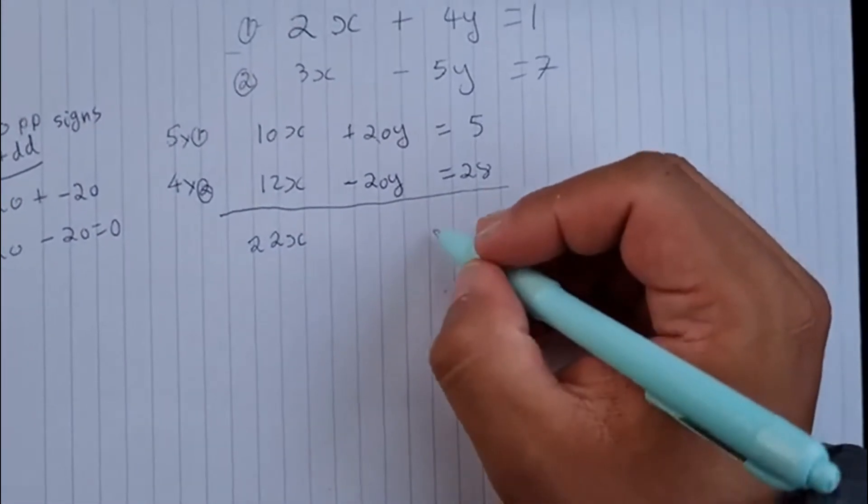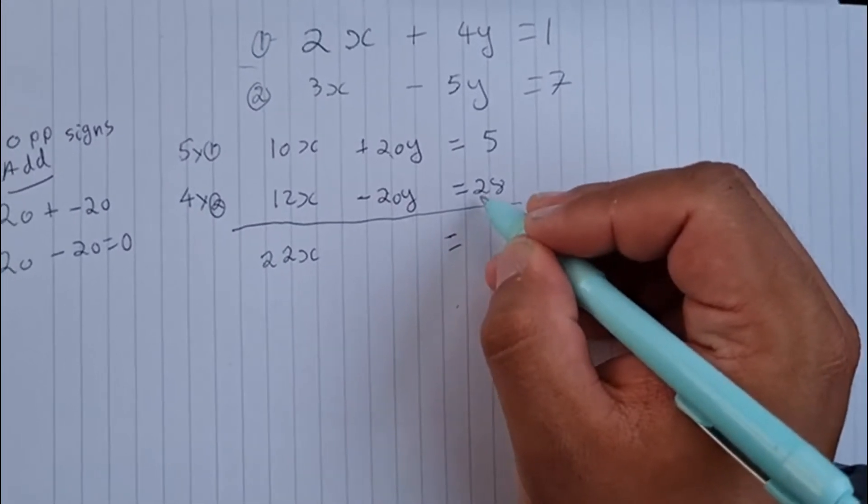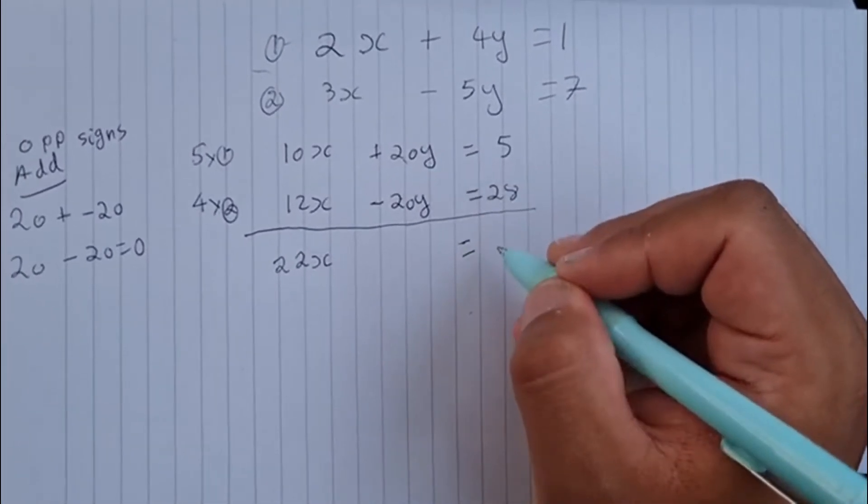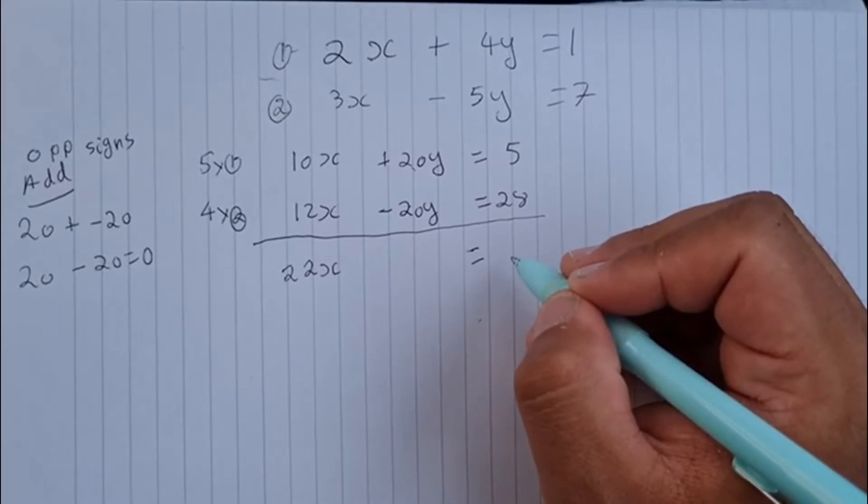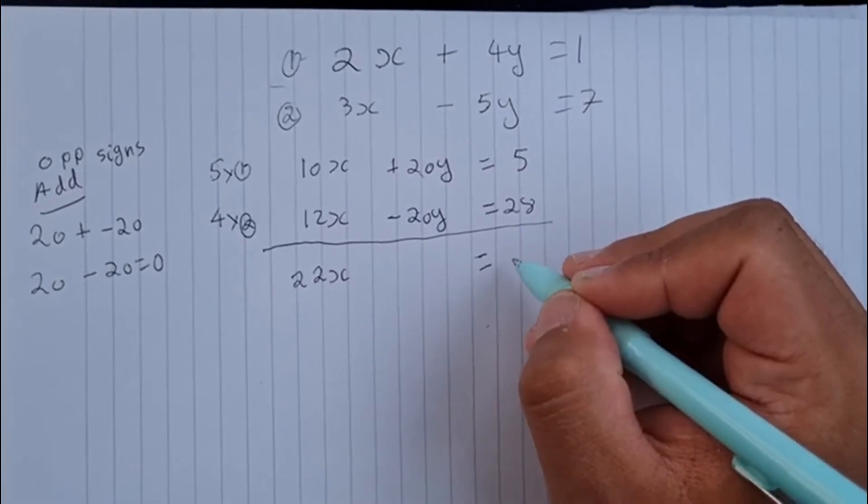So that gives me, on the right-hand side, 28 plus 5, which is going to be 33.